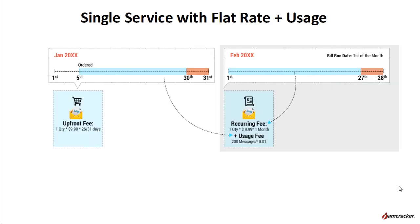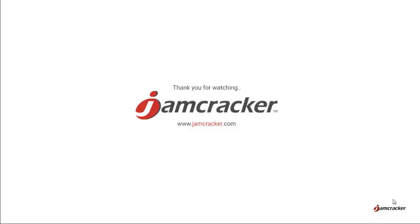Sometimes a single cloud service could have a fixed or flat rate in addition to a usage component. For example, a cloud messaging service could be billed up front at a flat rate of $9.99, and the usage amount could be based on the number of actual messages sent through the application. Thus, the Jamcracker platform provides a flexible cloud monetization model and allows the administrator to configure the service offer with subscription-based, usage-based, or user-based billing model.